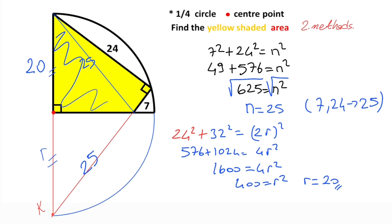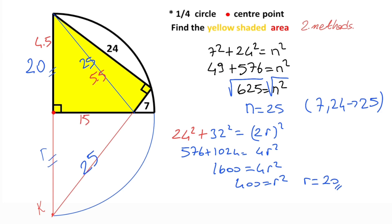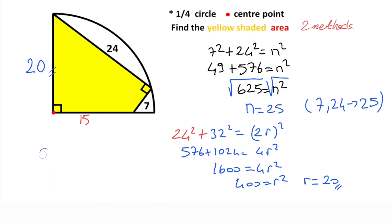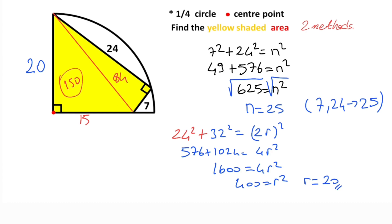Radius is 20 units. If we focus on this triangle, the hypotenuse is 5 times 5 equals 25, and this length is 4 times 5 equals 20. That means the remaining side must equal 3 times 5 equals 15 units. So this length is 15 units. If we connect these two corners again, the area of the first triangle is 150 and the area of the second triangle is 84. That means yellow shaded area equals 234 square units.